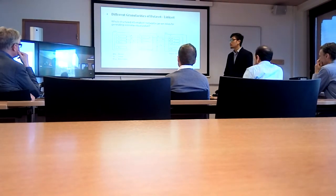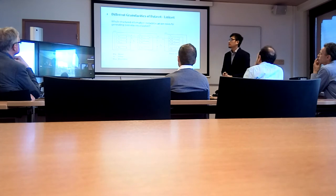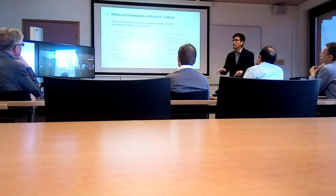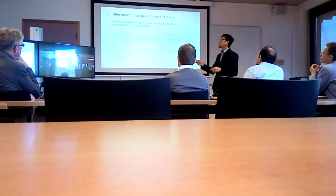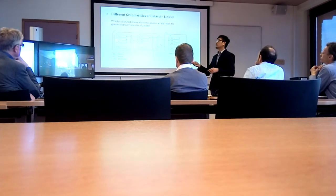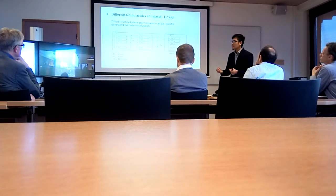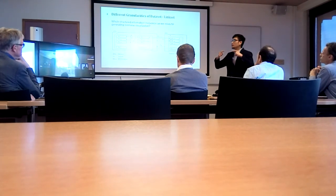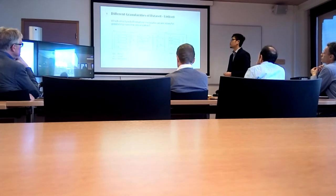Since we identified this gap, we try to bridge it by relating to other concepts — specifically the different granularities of datasets and linksets. This concept provides conceptualization and organization of metadata from different levels of data. One dataset could have several subsets, and one subset could have several distributions. The link itself exists at the distribution level, so we can aggregate it up to the subset level and also to the dataset level. This can be used as the basis for upper-view visualization.